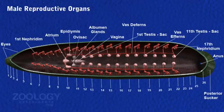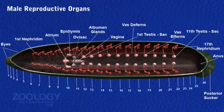Male Reproductive Organs. Male reproductive organs are: testis sacs, vasa afferentia, vasa deferentia, epididymus, ejaculatory ducts, and atrium.